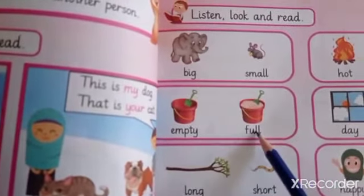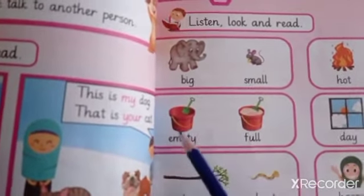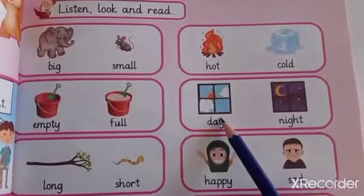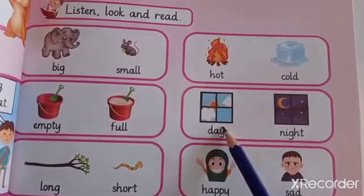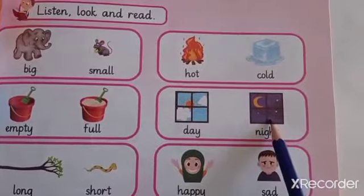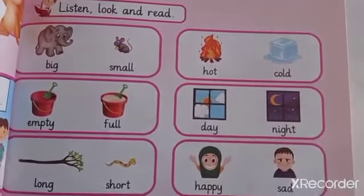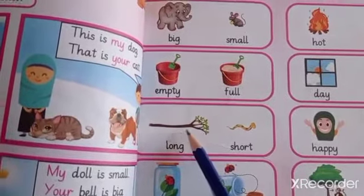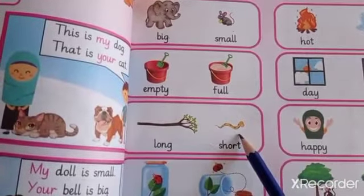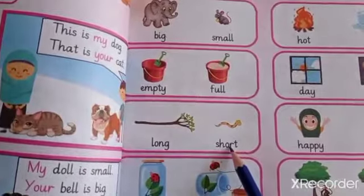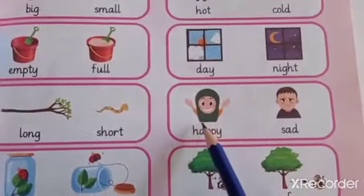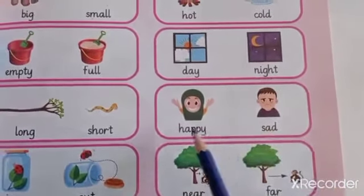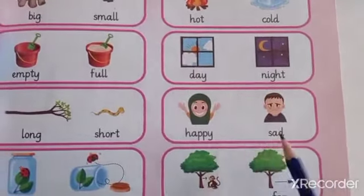There is a bucket full of sand and a bucket that is empty with no sand inside. Next: day — as you all know, we wake up during the day, and the opposite of day is night. Next: long — there is a long log and a short snake. Long means lamba, short means chota. A girl is happy and a boy is sad — so the opposite of happy is sad and the opposite of sad is happy.